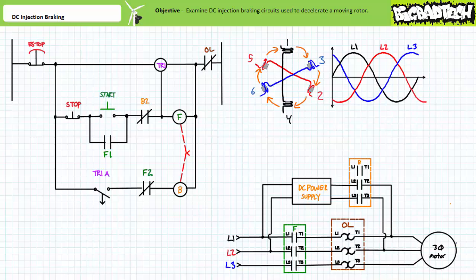DC injection braking is a method of decelerating a moving motor by halting the rotating magnetic field and applying a fixed DC voltage to some of the windings on the stator. When fixed DC voltage is applied to some of the windings, the rotor quits chasing a rotating magnetic field and tries to align itself with a fixed magnetic field produced by the stator. This counter torque decelerates the rotor and applied load.